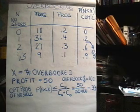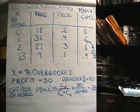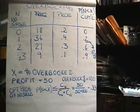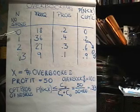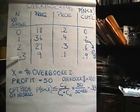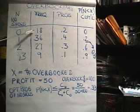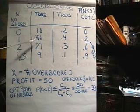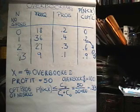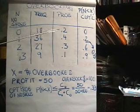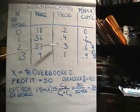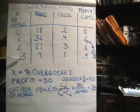In this example, we own a hotel and we're considering overbooking. When we've had full reservations, we've tracked the number of no-shows that have occurred. We've measured zero no-shows on 18 nights, 36 nights with one no-show, and so on. The probabilities are: 20% for zero no-shows, 40% for one, 30% for two, and 10% for three no-shows.